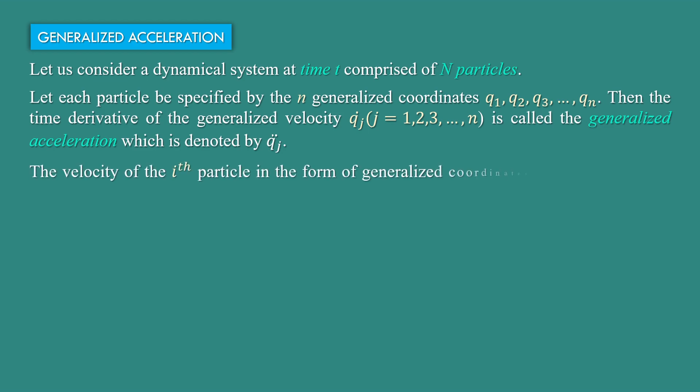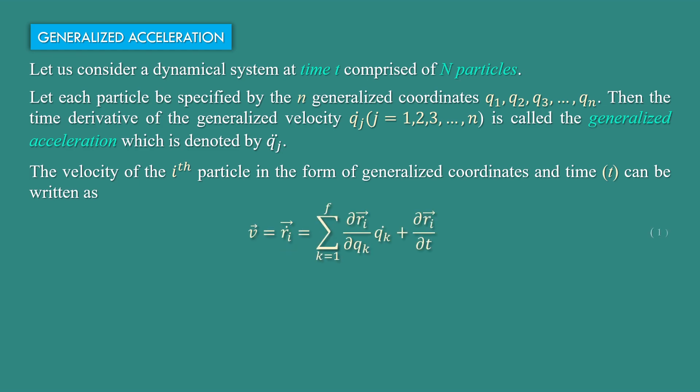The velocity of the ith particle in the form of generalized coordinates and time t can be written as: v equal to ri dot equal to summation k goes from 1 to f of (del ri by del qk) into qk dot, plus del ri by del t. Say this is equation number 1.